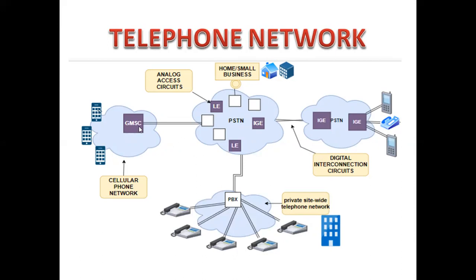Next is the GMSC — Mobile Switching Center — for mobile calls, meaning cellular phone networks, where you can make a call between two cells or phones. For international calls, we use the IG — International Gateway Exchange — which is connected to the PSTN. Communication between telephones is done via this digital interconnection circuit. These are the components of a telephone network.